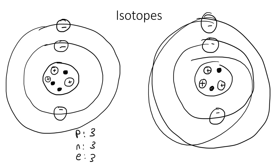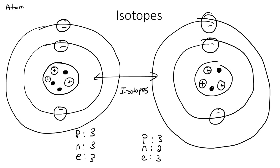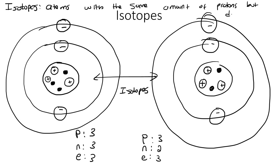Now look at this second one. If you look at the protons, neutrons, and electrons: the number of protons is three, but if you look at the number of neutrons, there are two. And then if you look at the electrons, there are three. So these two atoms are going to be called isotopes. The definition of isotopes is atoms with the same amount of protons but a different number of neutrons.